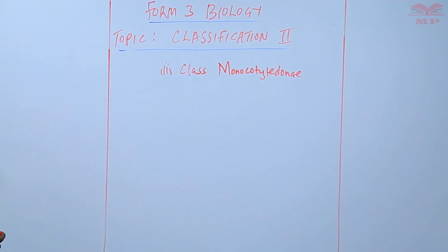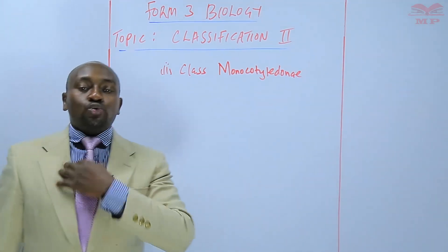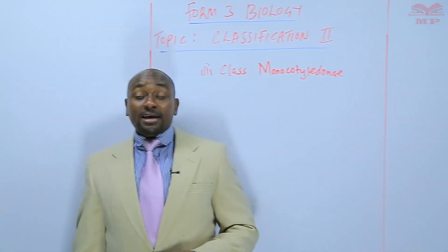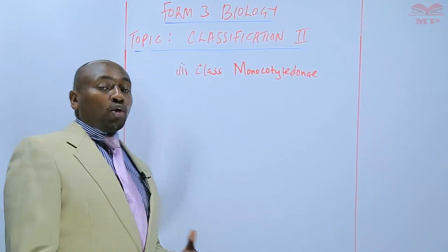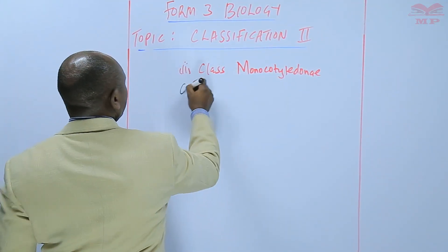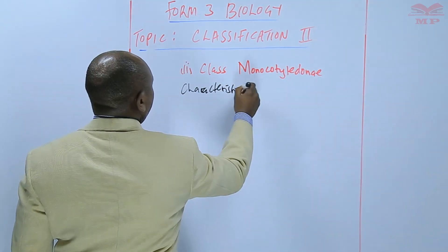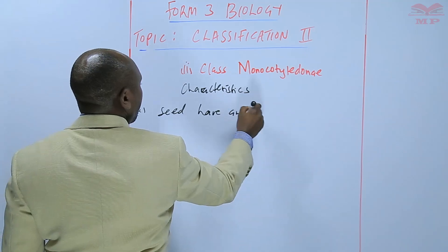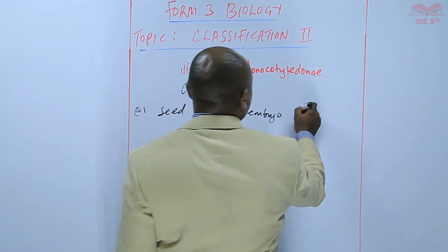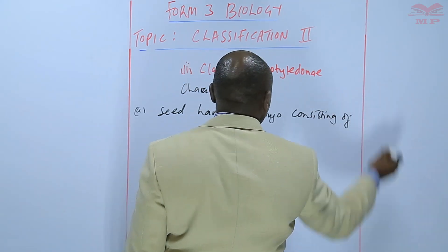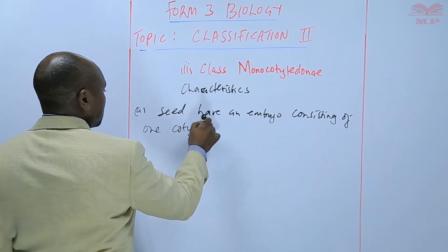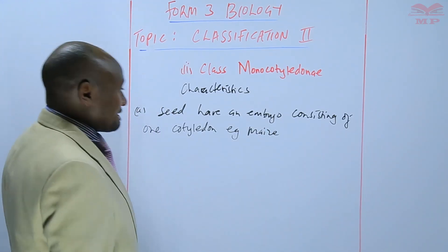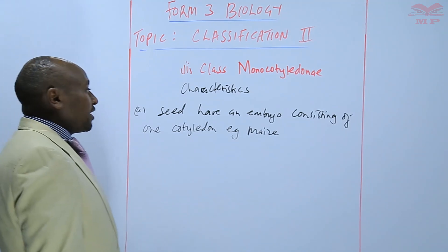Class Monocotyledonae, commonly referred to as Monocotyledonous plants, are plants whose seeds have an embryo consisting of only one cotyledon. An example is the grass family. Their seeds have one cotyledon within the embryo.